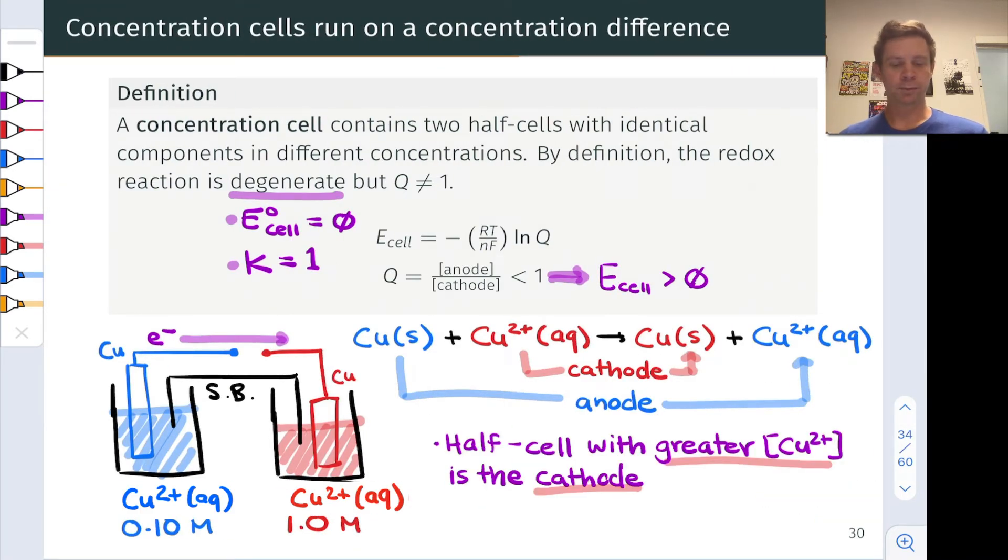One thing to note before we move forward is that the half cell with the greater concentration of copper 2+, or the oxidized metal cation, is the cathode. This is where reduction would like to occur, where nature would like reduction to occur, because the concentration of copper 2+, oxidized ions, is higher in that half cell. Electrons will spontaneously flow toward that greater concentration of copper 2+ ions to consume them in order to equalize the copper 2+ concentrations in both half cells at equilibrium.